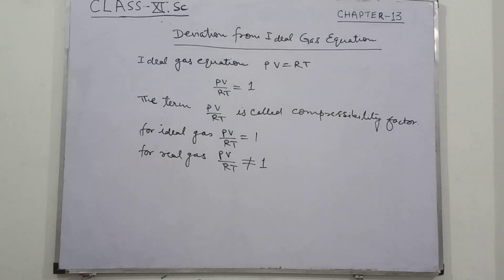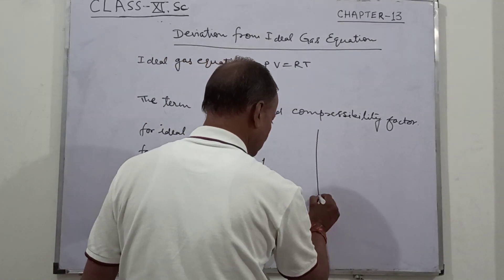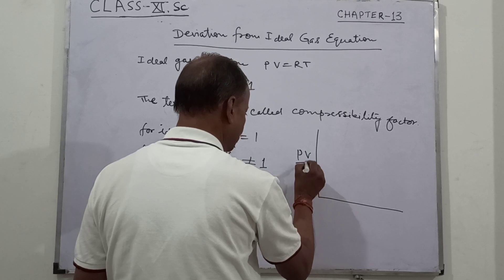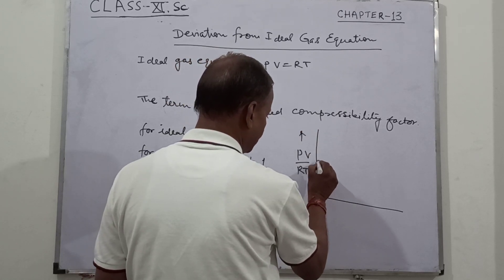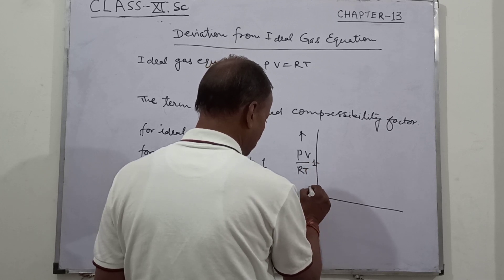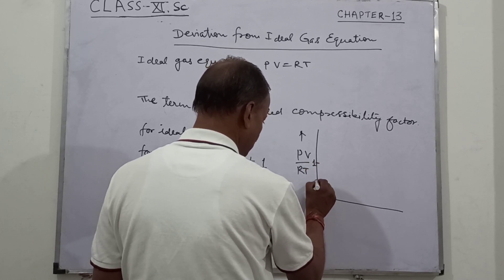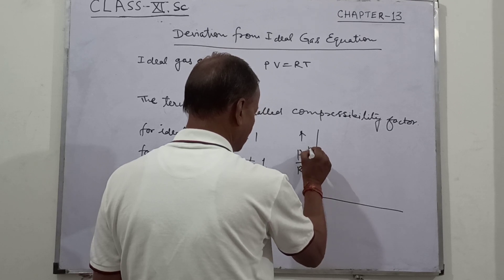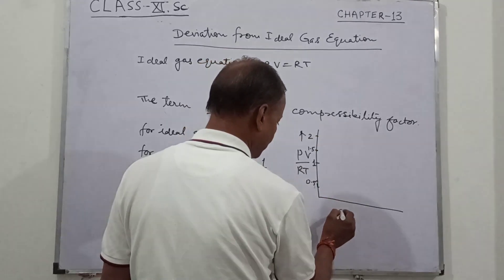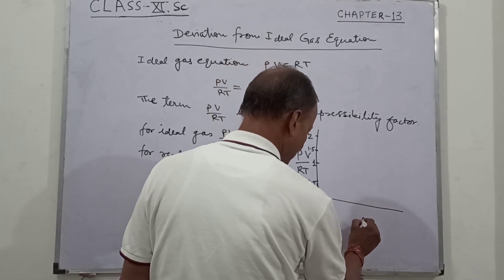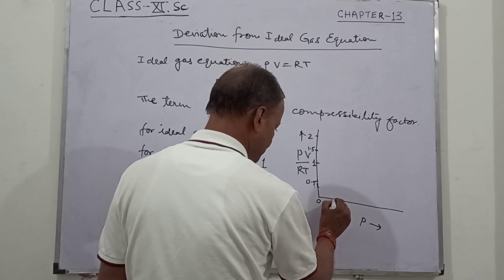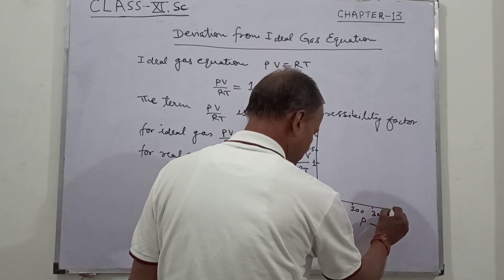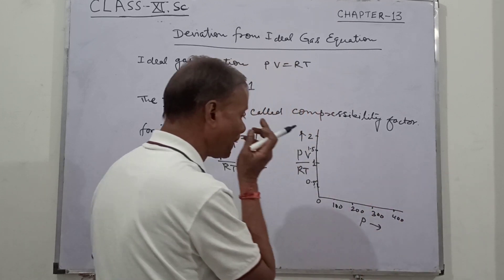Now we can see the graphs of these two. On the Y-axis we take PV upon RT, with values at 0.5, 1, 1.5, and 2. On the X-axis we take pressure P, with values at 100, 200, 300, 400, and so on.